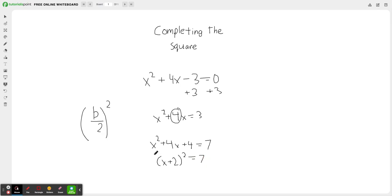And there you go. That's how you complete the square. You've turned this quadratic equation from x squared plus 4x minus 3 into an equation where you've completed the square and you have your constant on the other side.